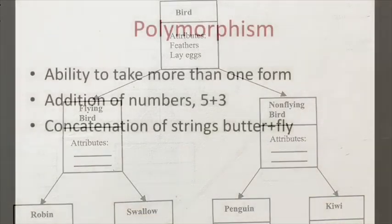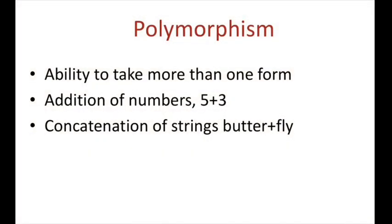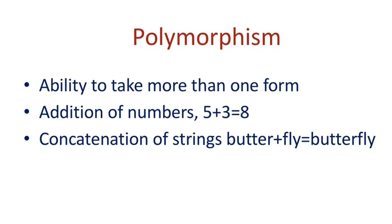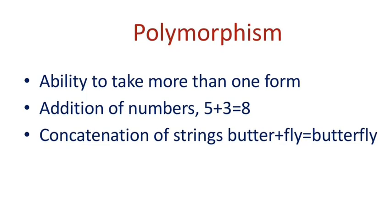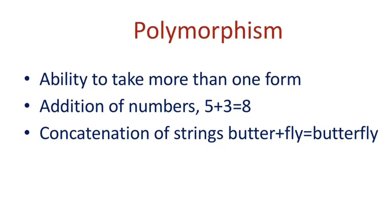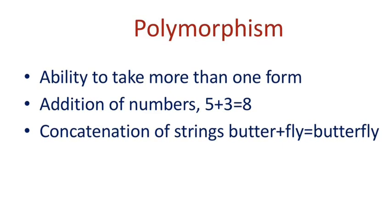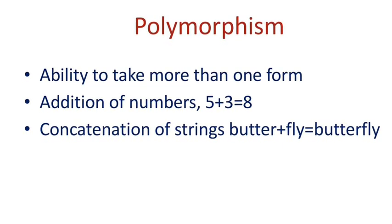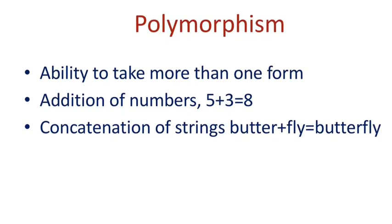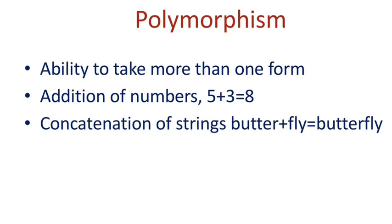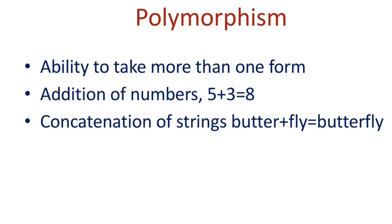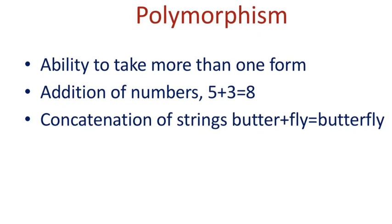Another important concept in OOPS is polymorphism. Polymorphism means the ability to take more than one form. For example, an operation may exhibit different behavior in different instances. The behavior depends upon the types of data used in the operation. Consider the operation of addition. For two numbers, the operation will generate a sum. If the operands are strings, then the operation would produce a third string by concatenation.